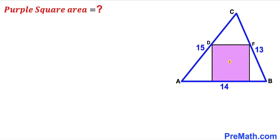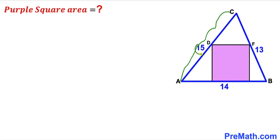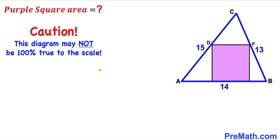Welcome to pre-math. In this video we have a purple square fully inscribed in a triangle ABC, such that the side length BC is 13 units, AB is 14 units, and AC is 15 units. Our task is to calculate the area of this purple square. Please give a thumbs up and subscribe, and keep in mind that this figure may not be 100% true to scale.